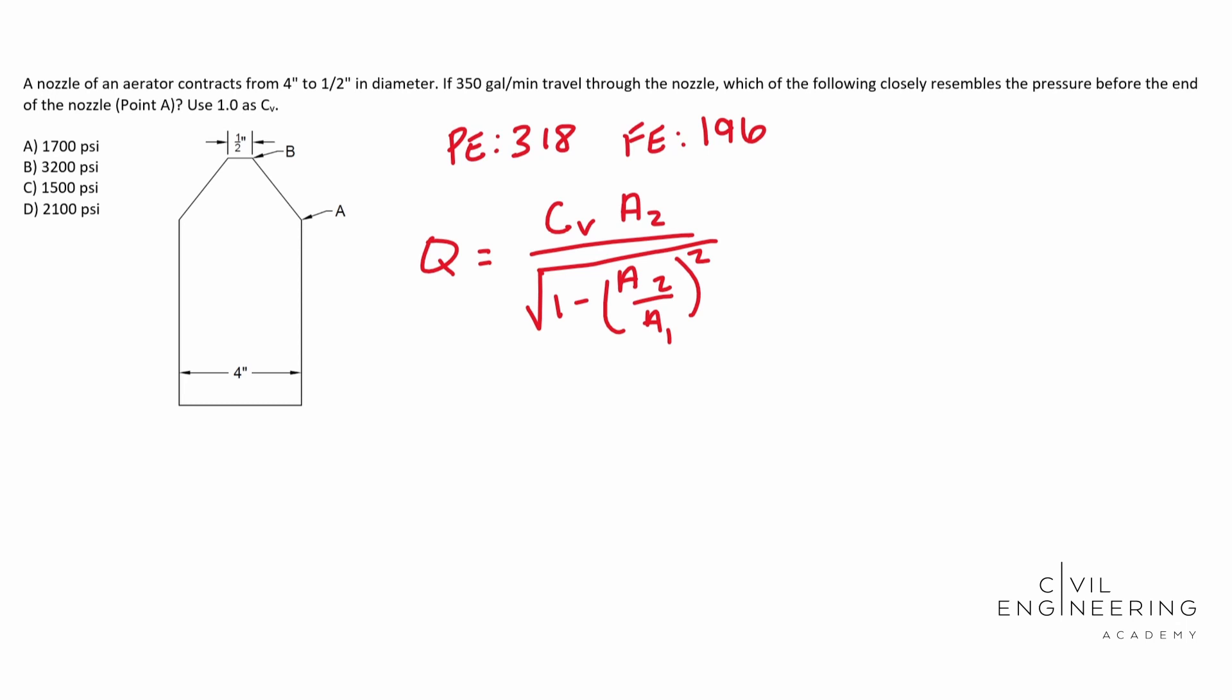And then you take the square root of that and then you multiply all that by the square root of two G, and we multiply two G by the pressure head plus our elevation at point one. And then we subtract the pressure head at point two and we subtract the elevation at point two.